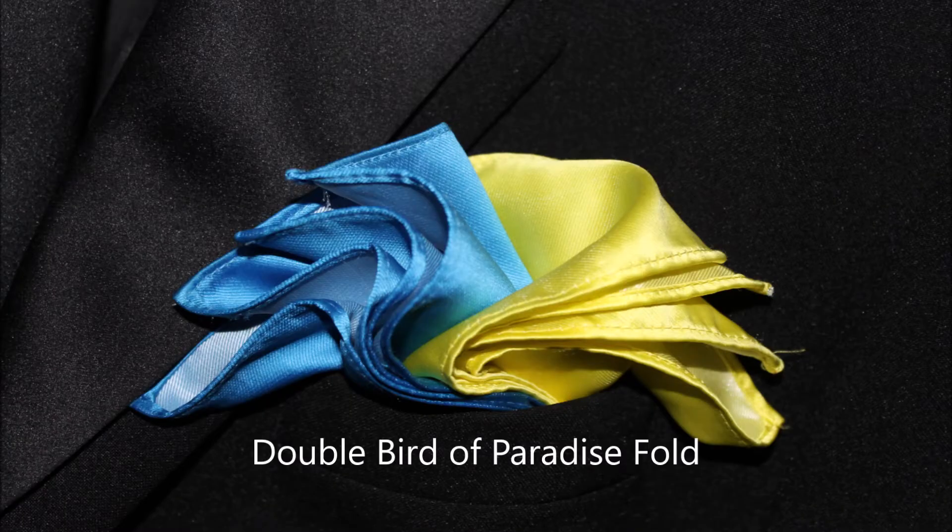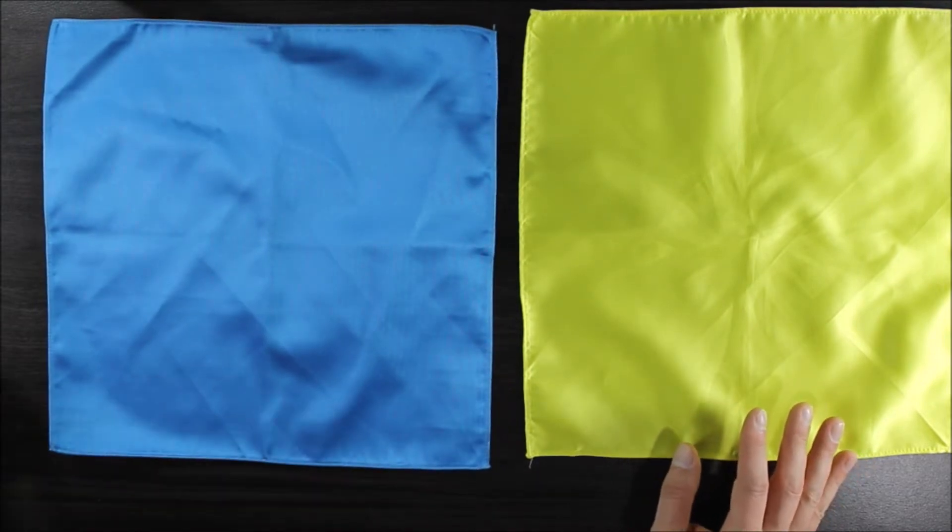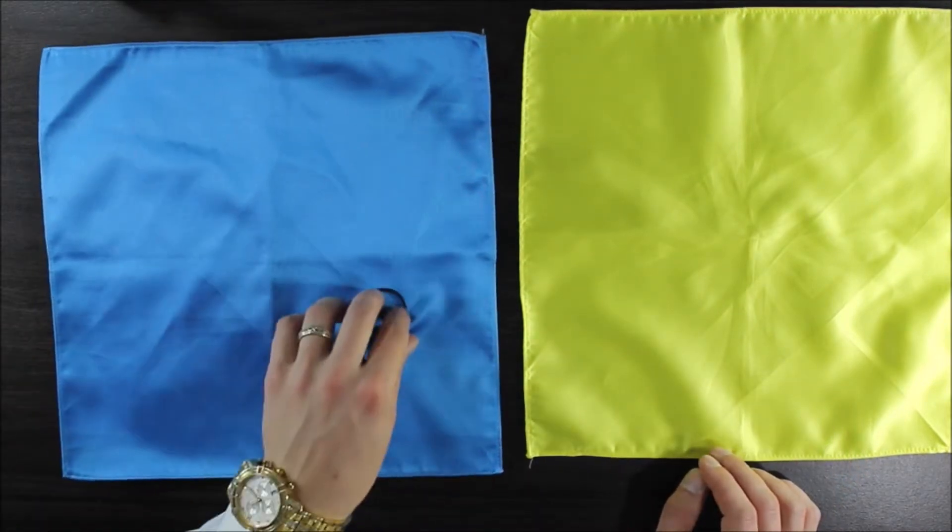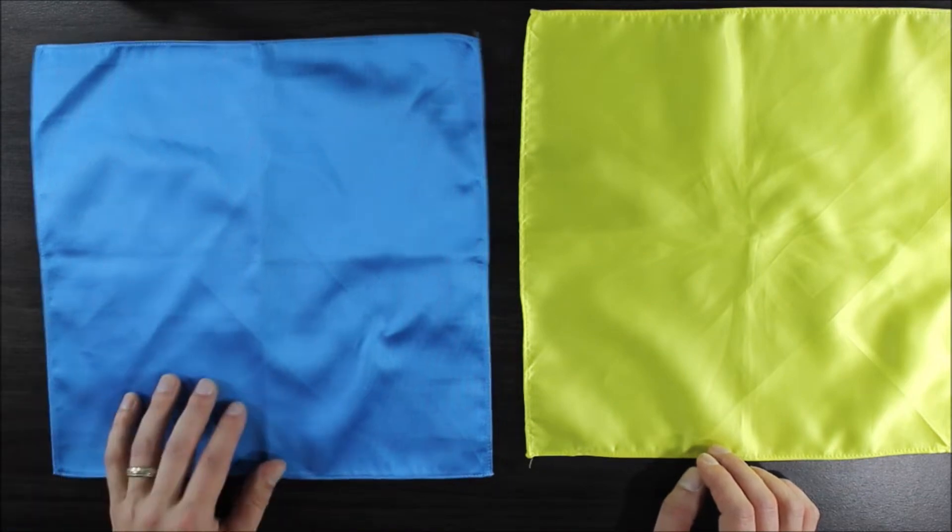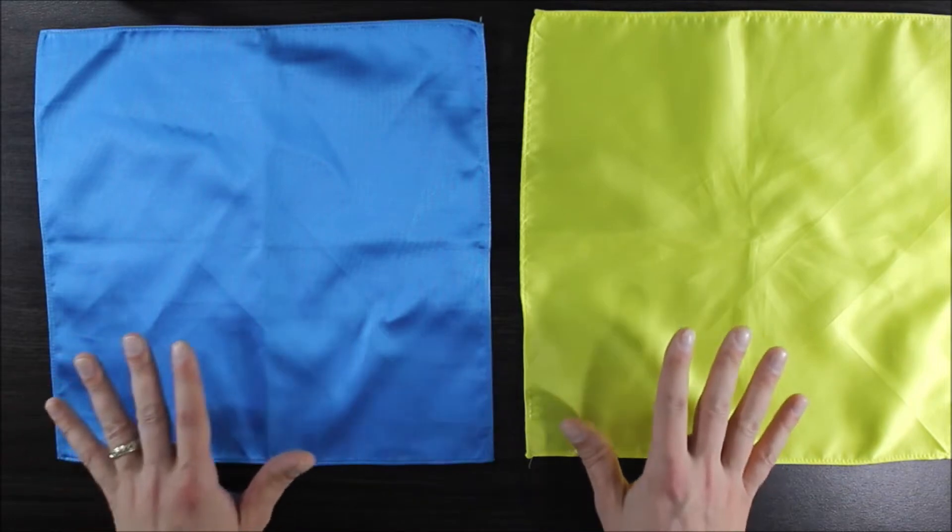Hey, in this video I'm going to be showing you how to do the double bird of paradise fold. Okay, so for the double bird of paradise, it's a little bit more difficult to fold. I'm going to use an elastic band at the end to hold it all together, but we're going to start off with folding both of our pocket squares into a smaller square.